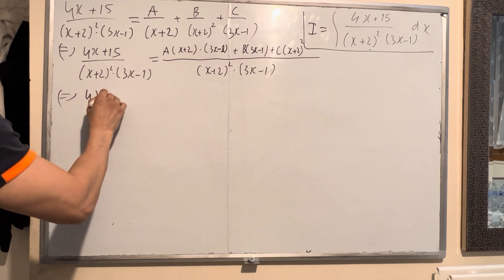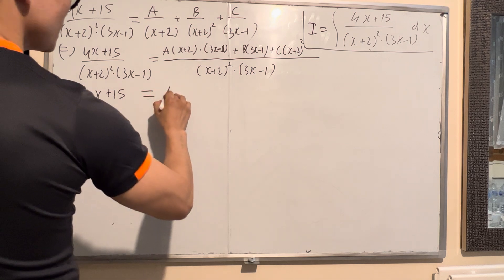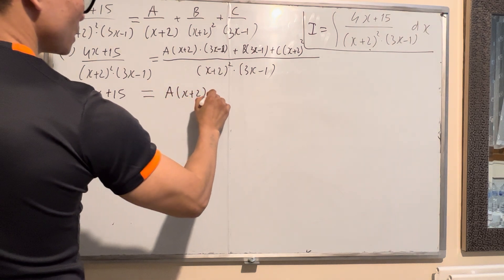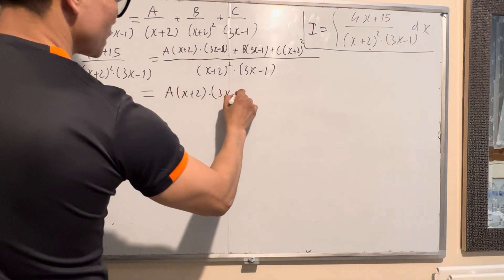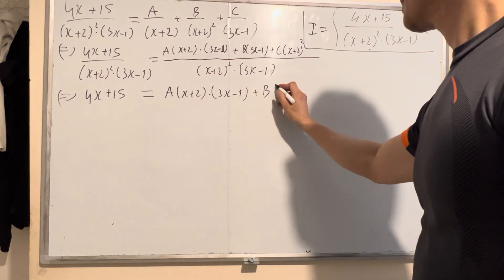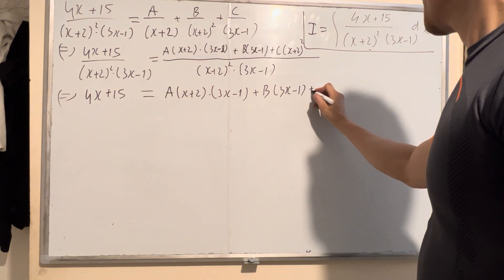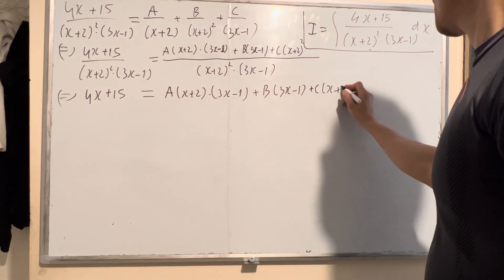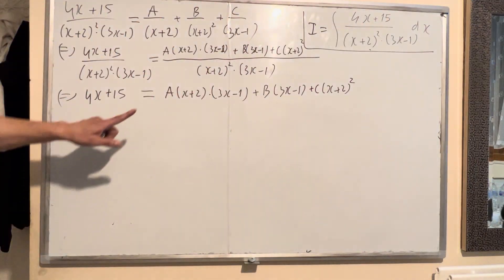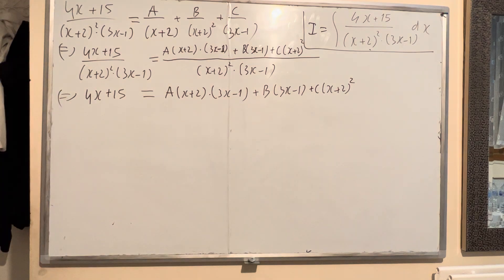Left hand side you got 4x plus 15. Right hand side: A times x plus 2 times 3x minus 1, plus B times 3x minus 1, plus C times x plus 2 squared. Now you have to find A, B, and C.